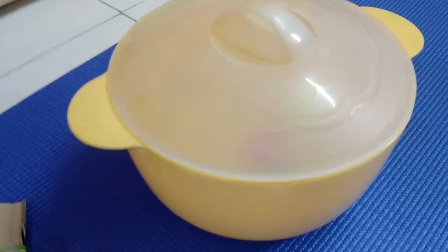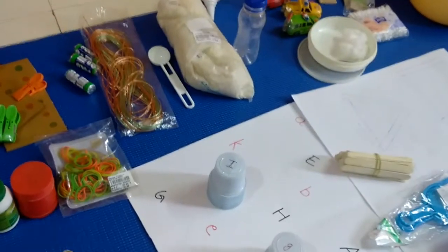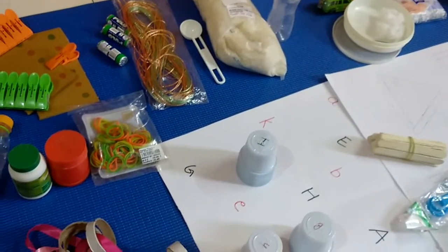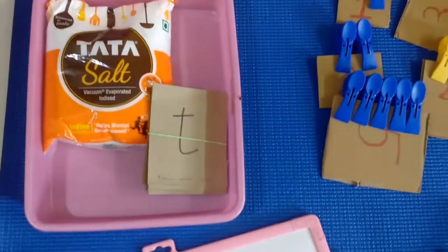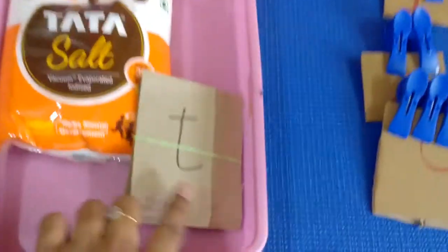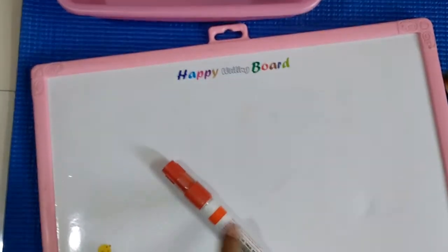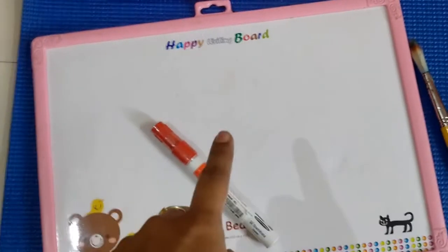These were some activities for two-year-old kids. Tracing work using salt and these are the tracing control cards. Whiteboard—I'll be writing letters over here, and the kids are supposed to rub the letters using the earbuds.